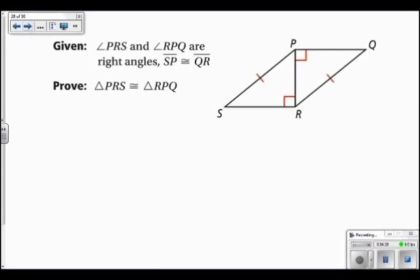We are probably going to use the hypotenuse leg theorem, so let's figure out what we need to know. This side is the hypotenuse of this triangle, and this side is the hypotenuse of this triangle. So what I need is one of the legs. Well, PR would be congruent to itself by the reflexive property, and that's the piece that we need.